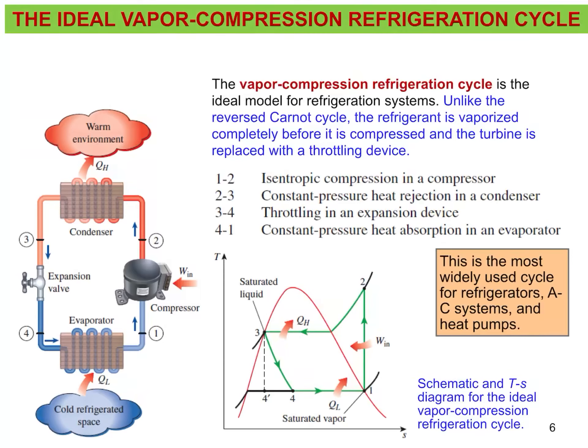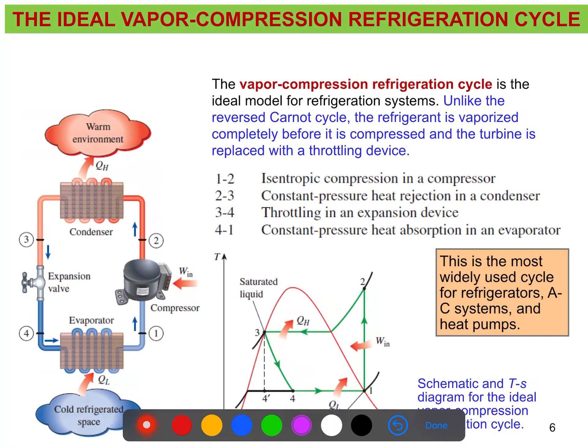We'll discuss the ideal vapor compression refrigeration cycle now. Previously we discussed the reverse Carnot cycle, and in the reverse Carnot cycle we found some impracticalities. To eliminate those impracticalities, we can introduce a new cycle. Let's look at the schematic of the ideal vapor compression refrigeration cycle.